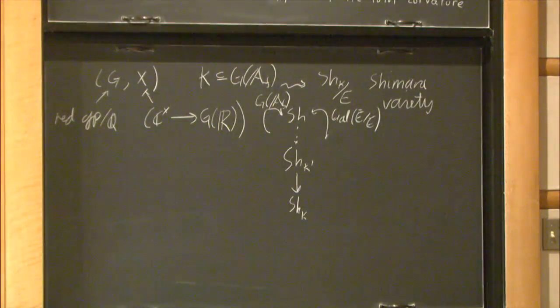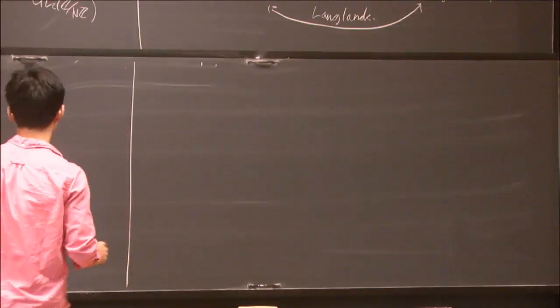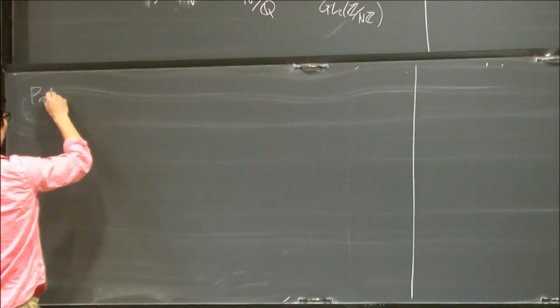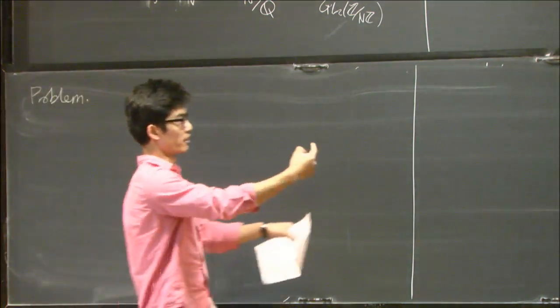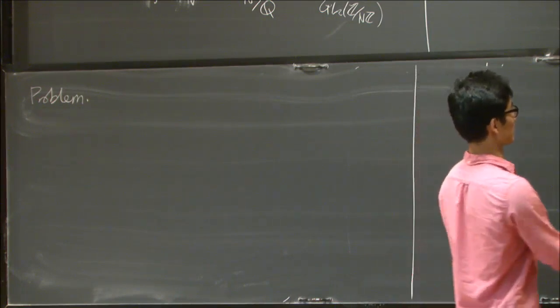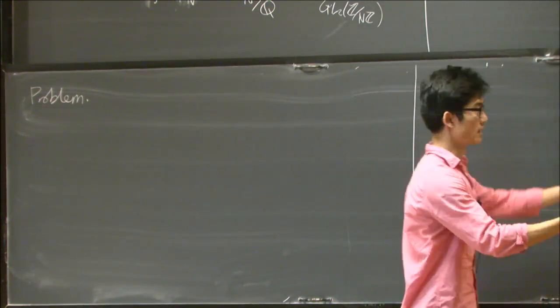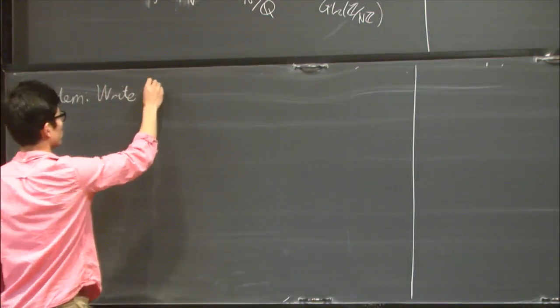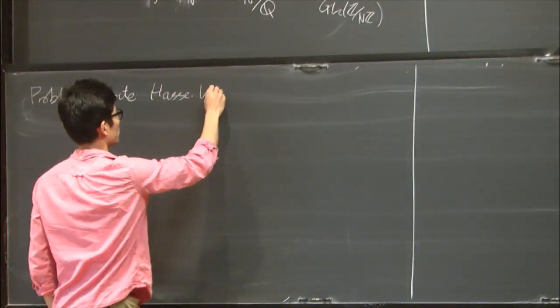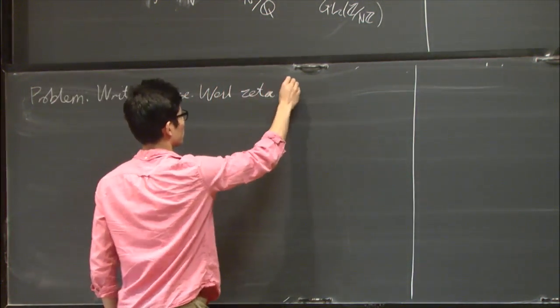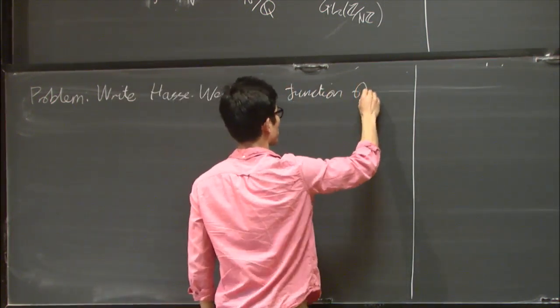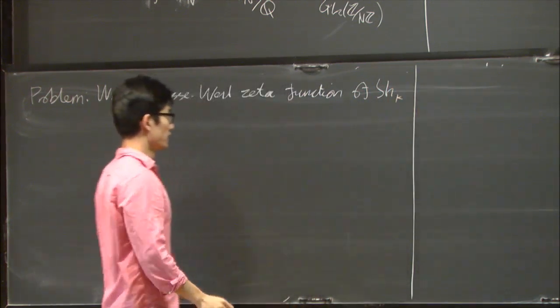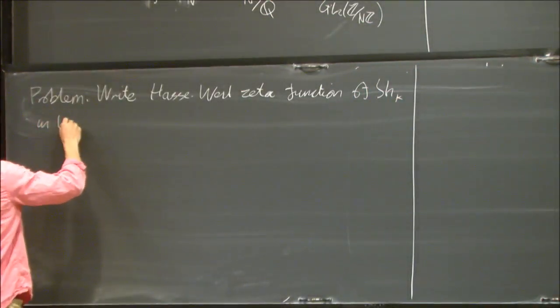Now let me talk a bit about what I'm interested in. The problem is trying to go in the opposite direction to what Deligne did. You start off with a certain motivic L function and try and write it in terms of automorphic L functions. The problem is to write the Hasse-Weil zeta function of the Shimura variety in terms of automorphic L functions.